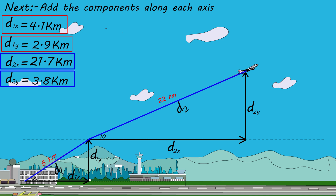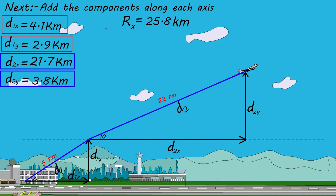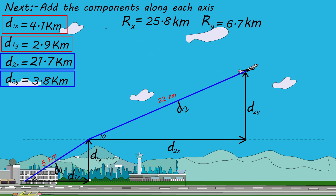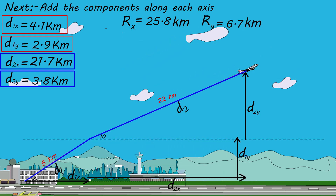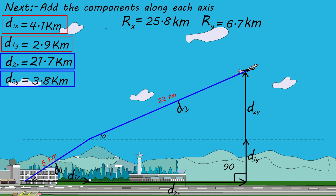Next, add the components along each axis. Rx = d1x + d2x = 4.1 + 21.7 = 25.8 km. Ry = d1y + d2y = 2.9 + 3.8 = 6.7 km. Now we have perpendicular vectors forming a 90-degree angle, so we can apply the Pythagorean theorem.